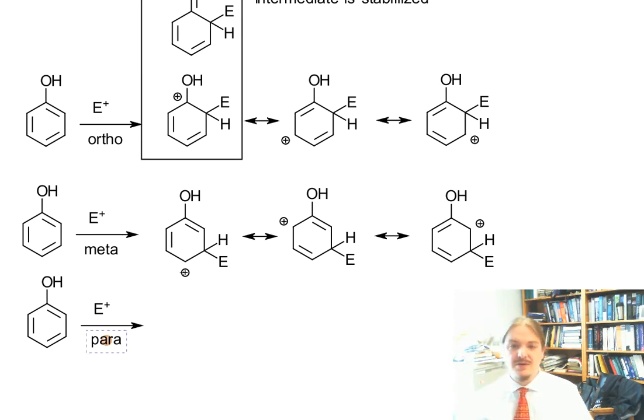and they also have the positive charge showing up ortho, para, and ortho to where the electrophile ends up. But positive charge is never next to the electron donating group, so this intermediate is not stabilized.